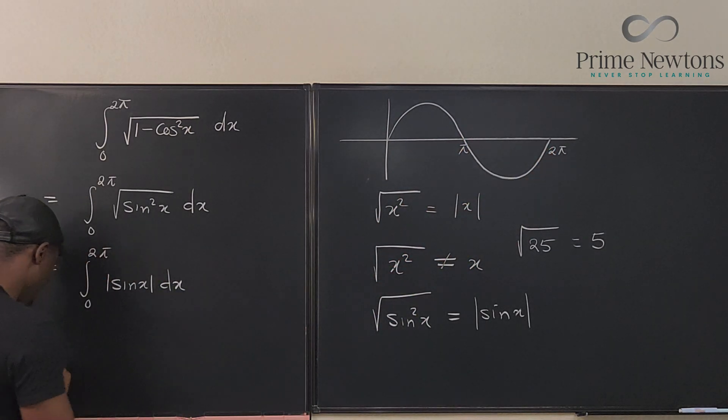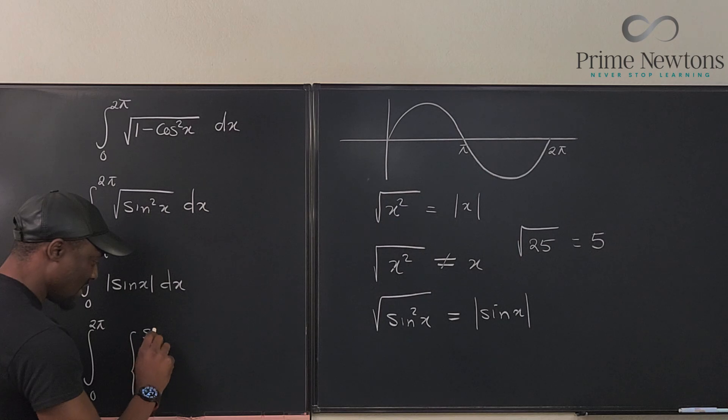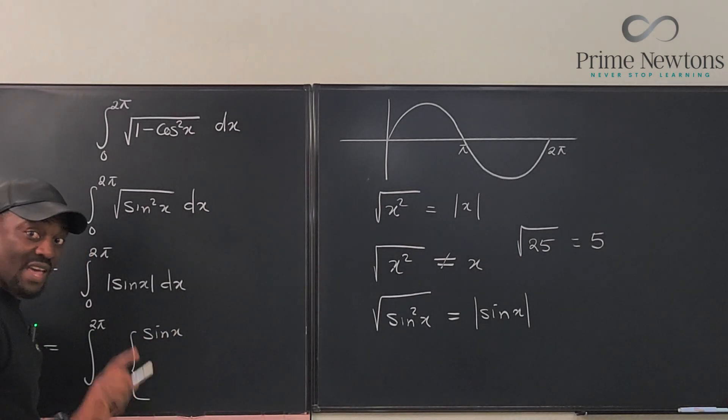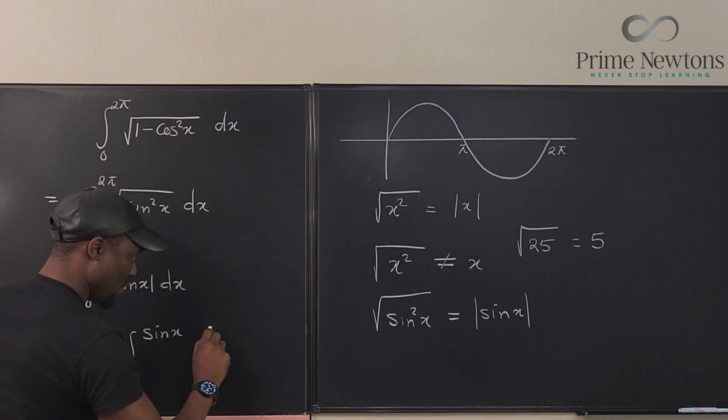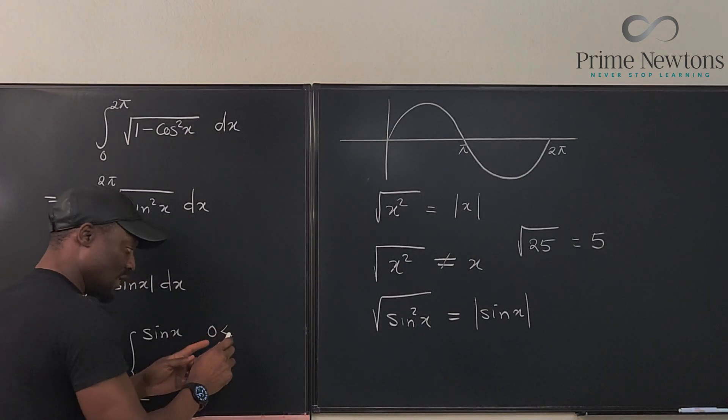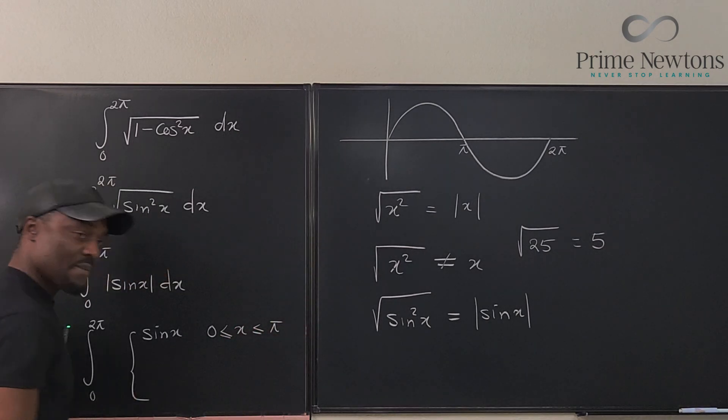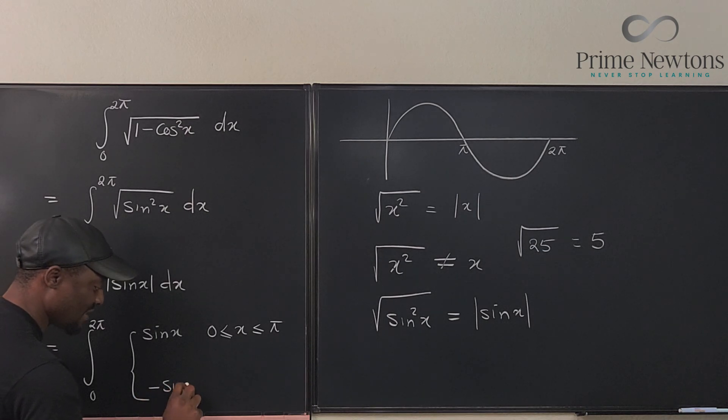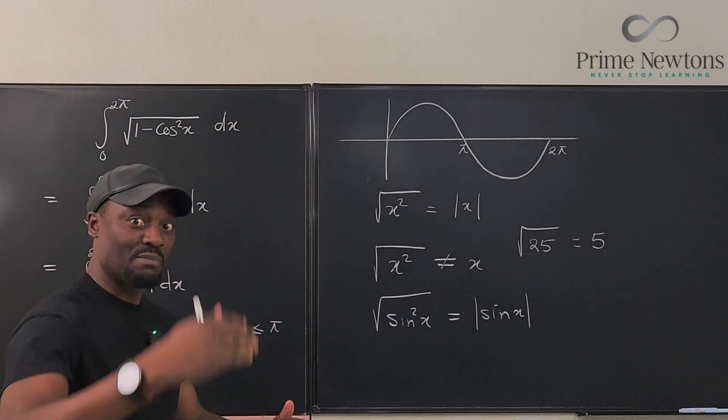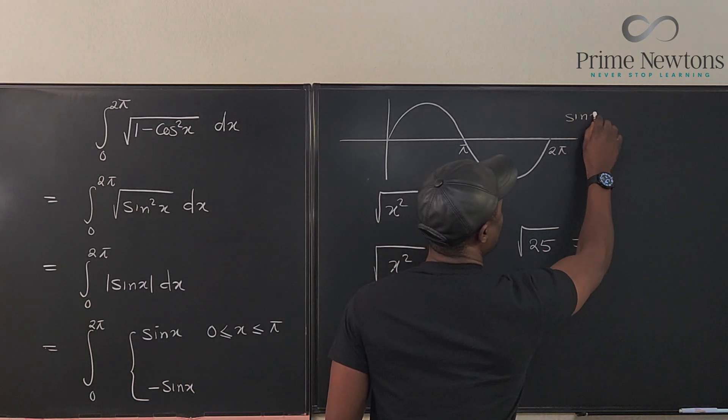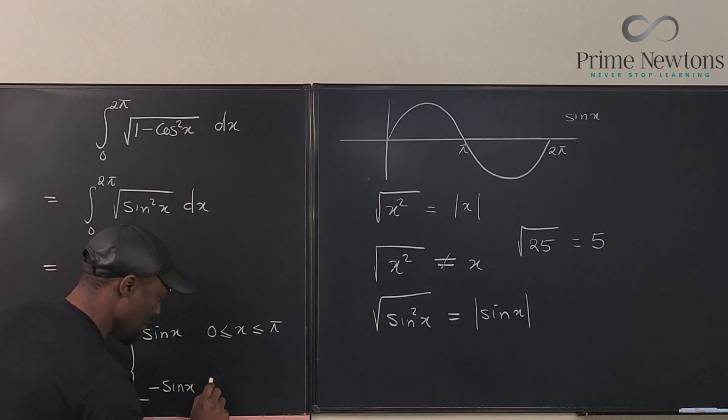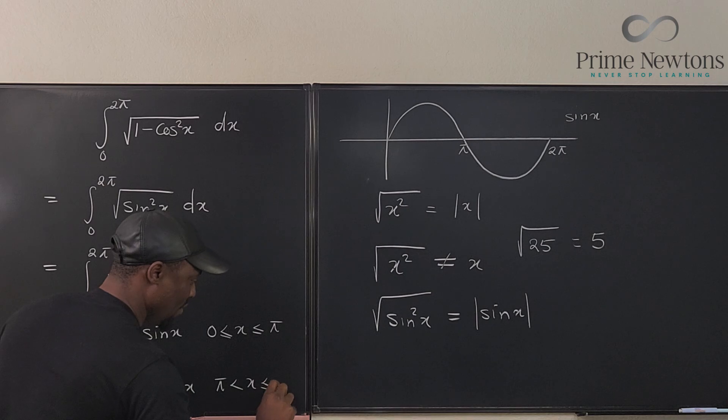So what we're saying is, this integral is the integral from zero to 2π of this function. We're going to write it this way. It's going to be sine x if you are between zero and π, it's going to be the positive version. For zero less than x less than or equal to π. And then it would be the negative version, negative sine x. The negative version, remember, absolute value means plus or minus. Here it is plus, here it is minus. This is the graph of sine x.